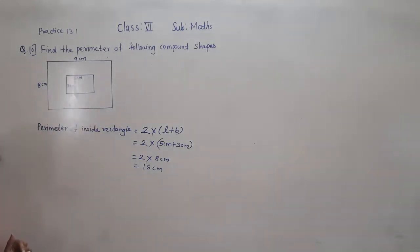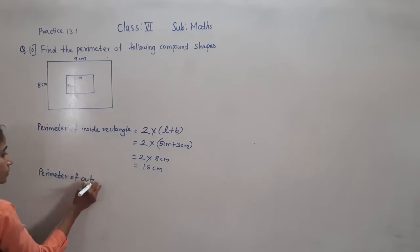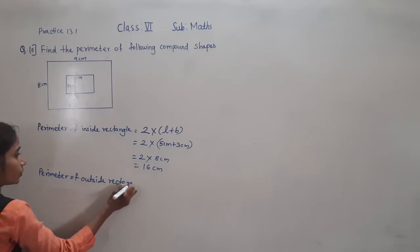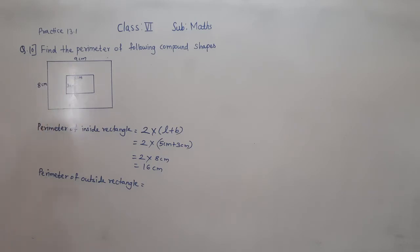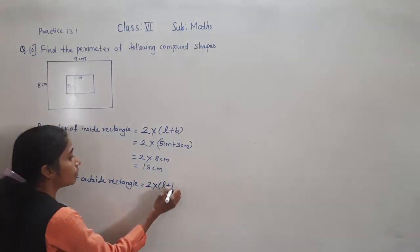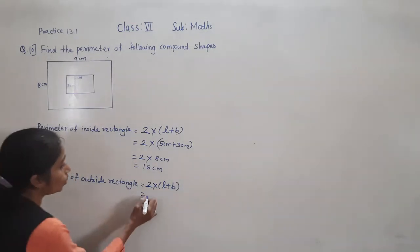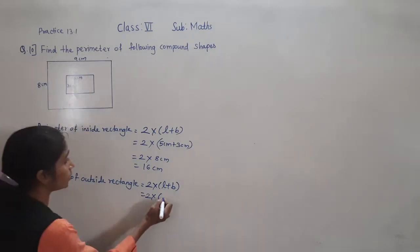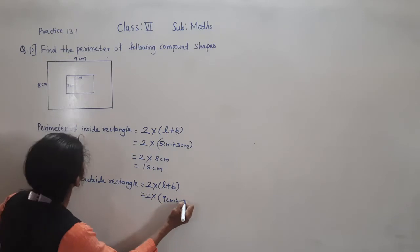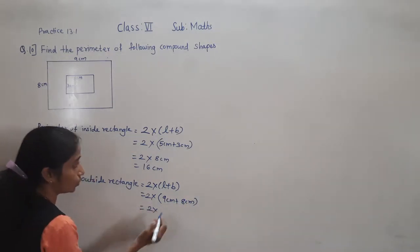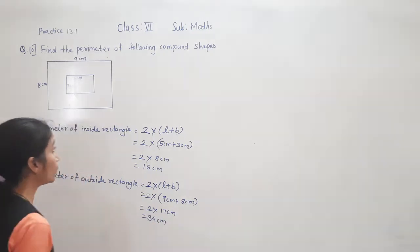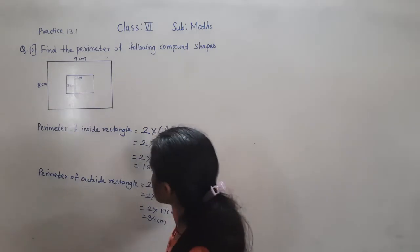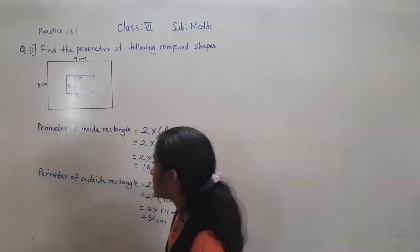Now let's find the perimeter of the outside rectangle. What is the perimeter of this rectangle? 9 cm is the length and 8 cm is the breadth. Formula: 2 into bracket, length plus breadth. So 2 multiplied by 9 plus 8 equals 17. So 2 times 17 is 34. Perimeter of outside rectangle is 34 cm.